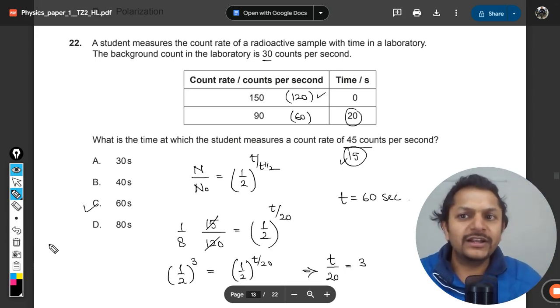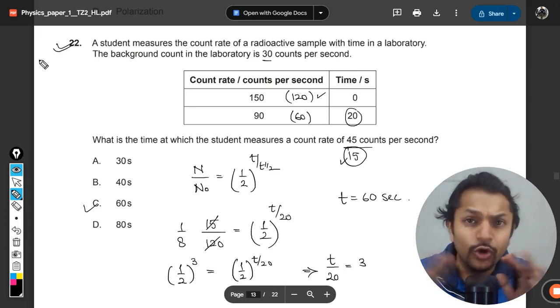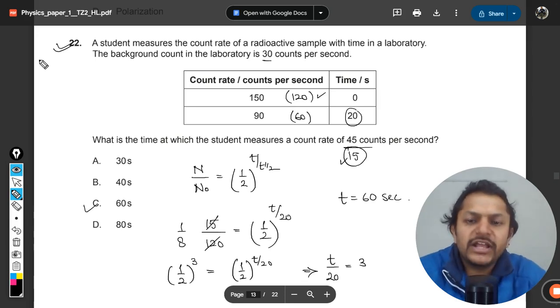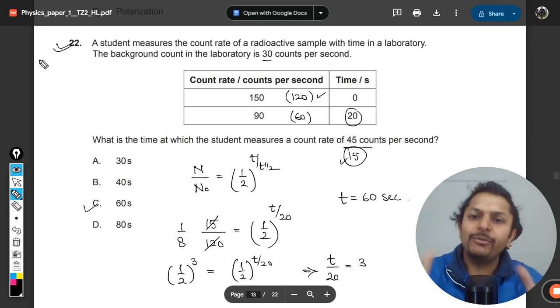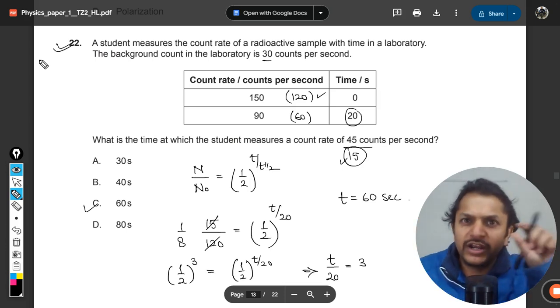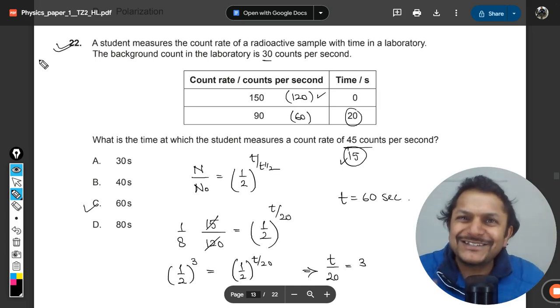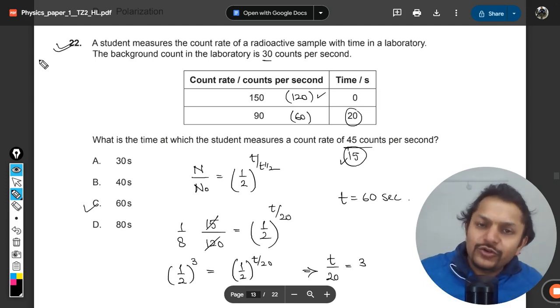I know this kind of question is very specific to count rate. No book is talking about it and the formula is not available in the data booklet. But I have done a couple of questions already on the YouTube channel. If you search 'count rate Professor Varun' on YouTube or Google, you will find four or five such questions.